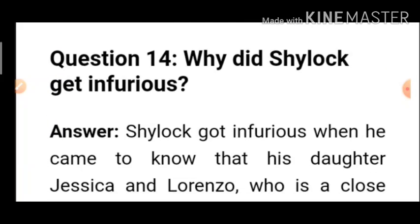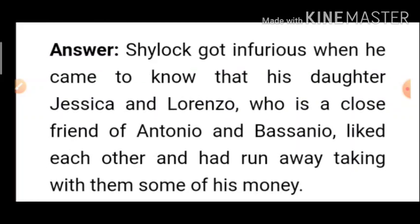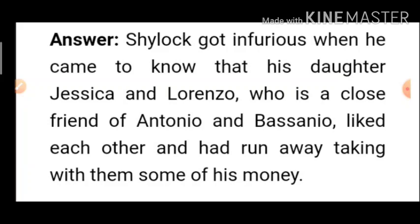Question 14: Why did Shylock become furious? Going back to Act 2: Shylock became furious when he came to know that his daughter Jessica and Lorenzo — a close friend of Antonio and Bassanio — had eloped together, and Jessica had taken some of his money with her. Jessica had also taken jewels packed in a casket, including a turquoise ring and as many ducats as she could carry. That is why Shylock was very angry and was even more determined to take the pound of flesh.